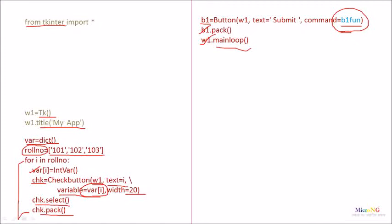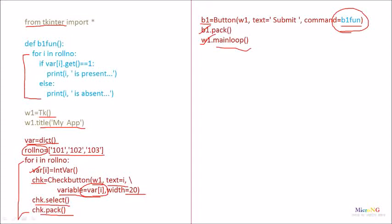The button function v1_function has to be defined. In v1_function, we take the status of each CheckButton using a for loop: for i in roll_number. The variable i takes each individual value from roll_number — 101, 102, 103, etc. The access variable for each CheckButton is var[i], which is a dictionary element with the index being the roll number. We check var[101].get(), which returns the status — 1 or 0. If it is 1, that roll number is marked as present; otherwise, if the status is 0, that roll number is marked as absent.